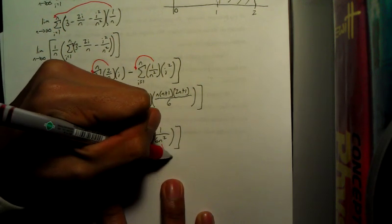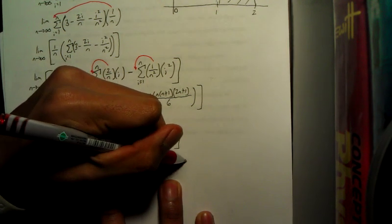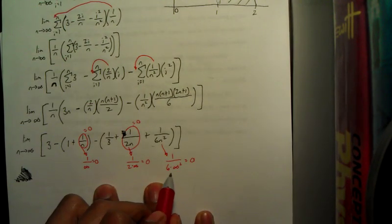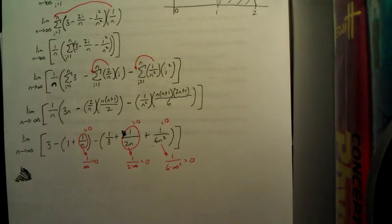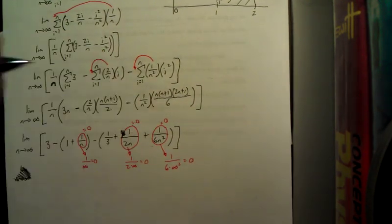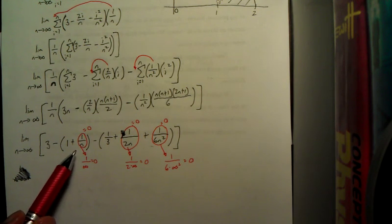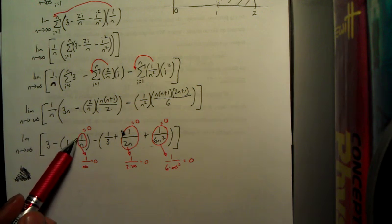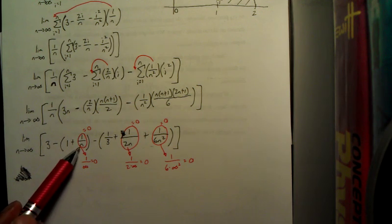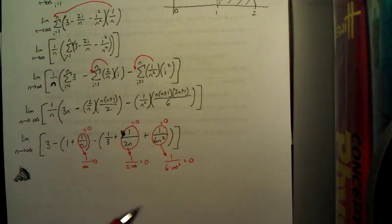And on this last section, we have 1 over 6 times infinity squared. That one's going to equal 0. And so that part, this part, is 0 as well. The reason it's 0, it's a theoretical idea, but if you have a 1 on the top and your denominator is approaching infinity, which is some huge number, then 1 divided by some huge number is just going to be really close to 0.